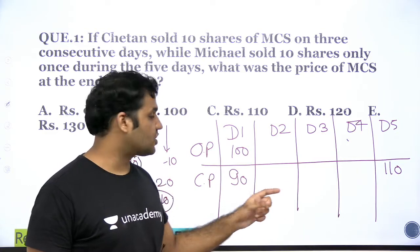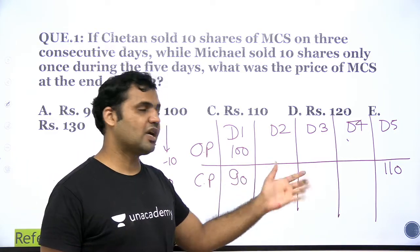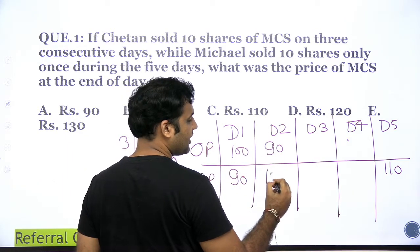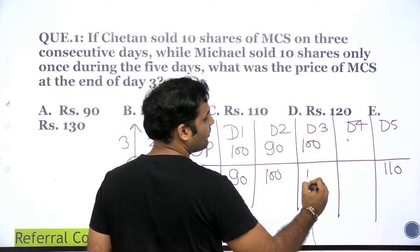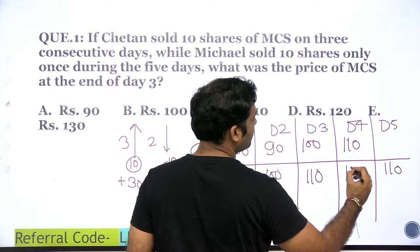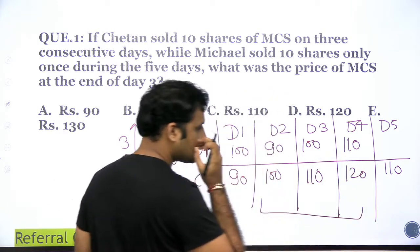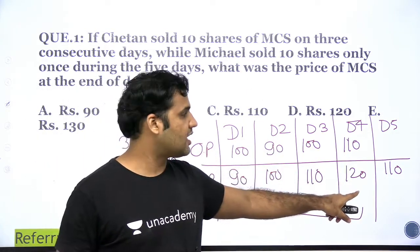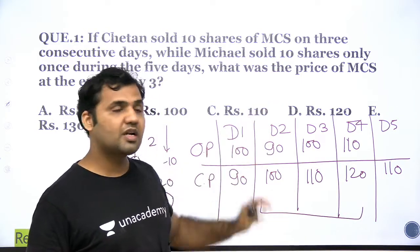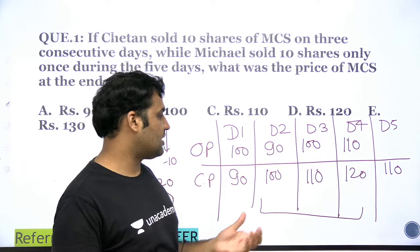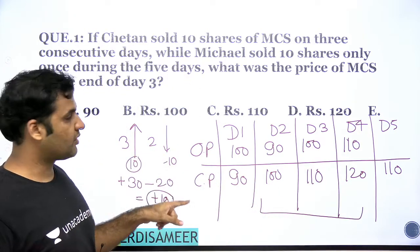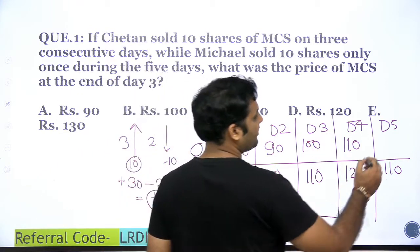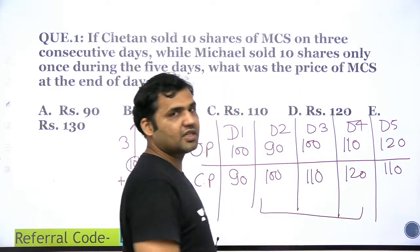So the only valid sequence is: Day 1 price goes down from 100 to 90; Days 2, 3, 4 the price goes up — 90→100→110→120; and Day 5 the price goes down from 120 to 110. This satisfies Chetan selling on three consecutive days (Days 2, 3, 4) and Michael selling only once (on Day 4, when price closes at 120, which is above 110). We've also confirmed 3 ups and 2 downs, closing at 110. The set is solved.